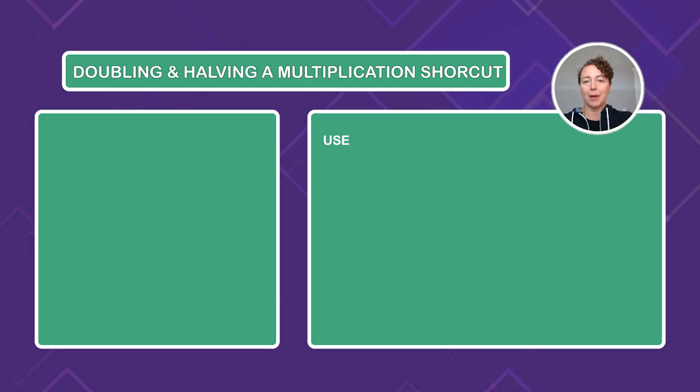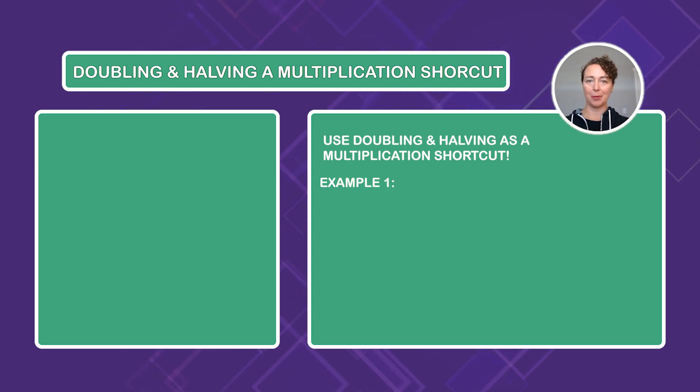Our second trick is all about using doubling and halving as a multiplication shortcut. This technique is especially useful when multiplying larger numbers. The idea is to double one number and halve the other, thereby making the calculation simpler. Let's dive in with an example.